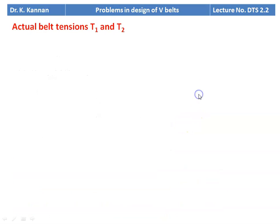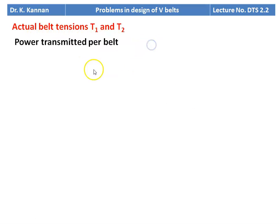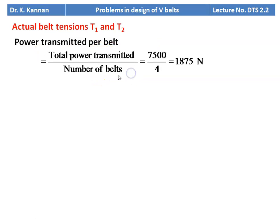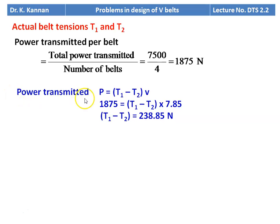Now we calculate the actual belt tension T1 and T2. Power transmitted per belt = total power / number of belts = 7500 / 4 = 1875 W. Power transmitted is given by P = (T1 − T2) × V, so 1875 = (T1 − T2) × 7.85, giving T1 − T2 = 238.85 N.